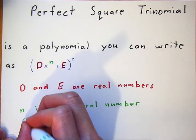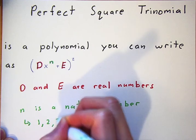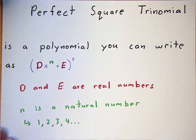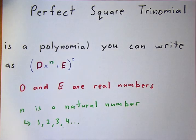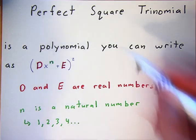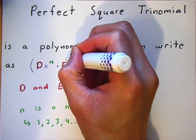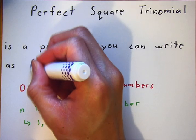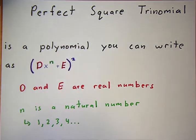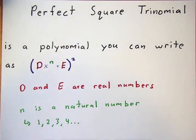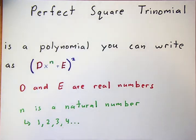Natural numbers are your 1, 2, 3, 4, et cetera. The square means there are two of these parentheses. Your x is just a variable. Take a moment to write this down in your notes, and please leave a blank section right after this, because we're going to come back to this page. But before we do that, let's look at some examples of perfect square trinomials.